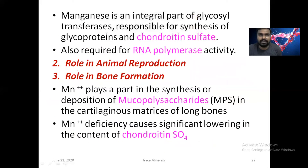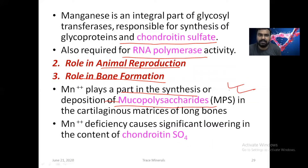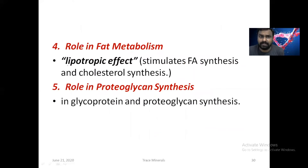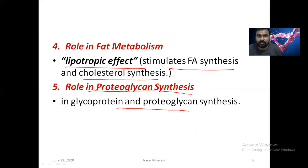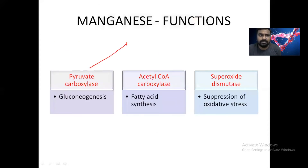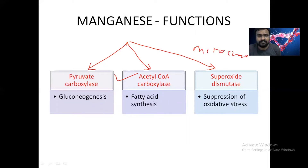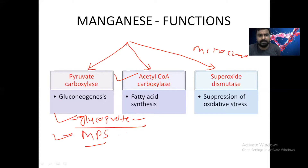Manganese is an integral part of glycosyl transferase, which is responsible for synthesis of glycoprotein and chondroitin sulfate. It is also required for RNA polymerase activity. It has a role in animal reproduction and in bone formation. Manganese plays an important part in the synthesis or deposition of mucopolysaccharide in the cartilage matrix of the long bones. Manganese deficiency causes significant lowering of chondroitin sulfate. It also has a role in fat metabolism with a lipotropic effect, stimulating fatty acid synthesis and cholesterol synthesis.